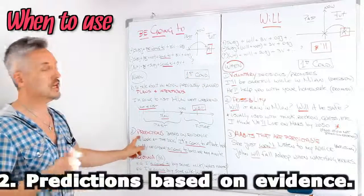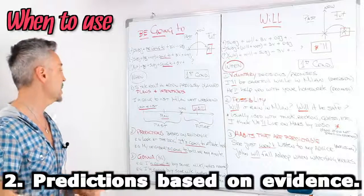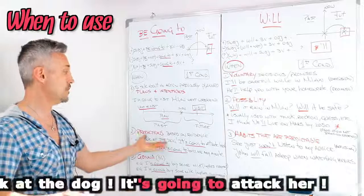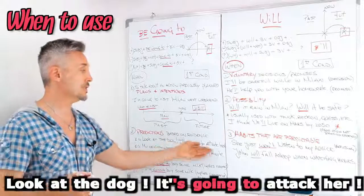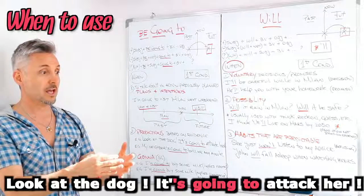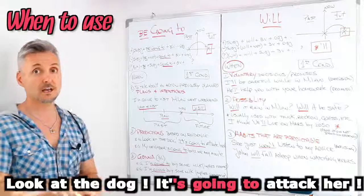The second usage is for predictions based on evidence. On evidence. For example, look at the dog. It's going to attack her. So right now, I look at the dog and I'm predicting he's going to attack a person.